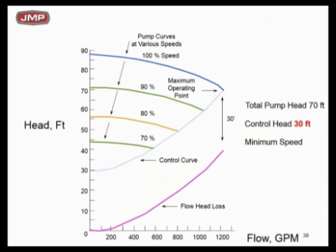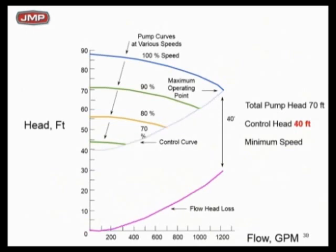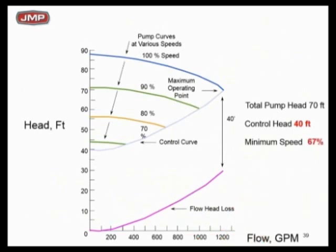At zero flow, what is the minimum pump speed? At zero flow, I've got to maintain 30 feet — not zero. With 100% variable head I'd go to zero head at zero flow, but here I've got to have 30 feet. So roughly 60% pump speed is the minimum speed of this pump at zero flow to maintain that 30 feet for the critical zone. That's where people are getting in trouble. Now if I increase the control head to 40 feet — you see the blue line shifting up — my minimum speed is now 67%. The control head controls the minimum speed of the pump.